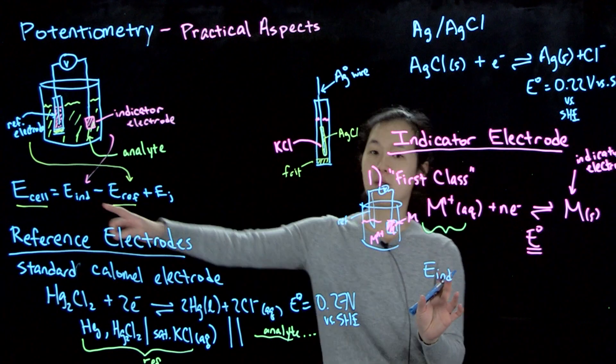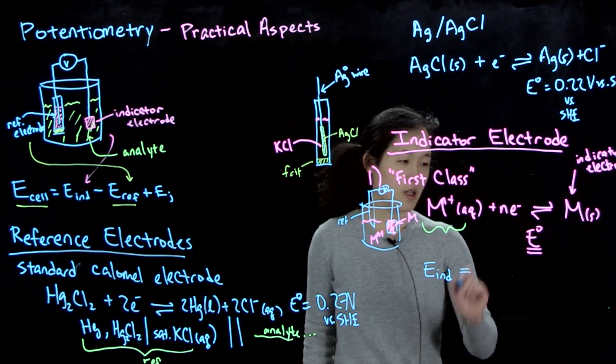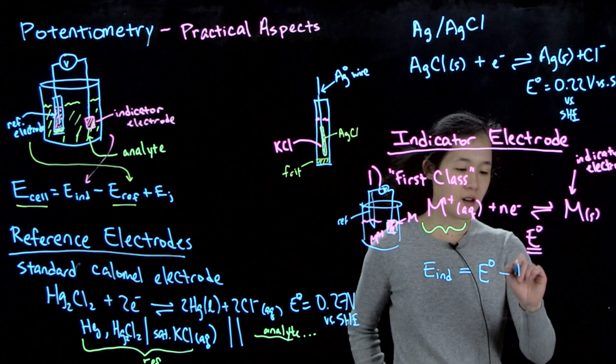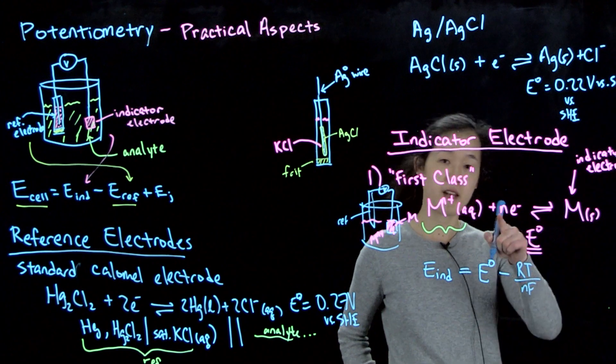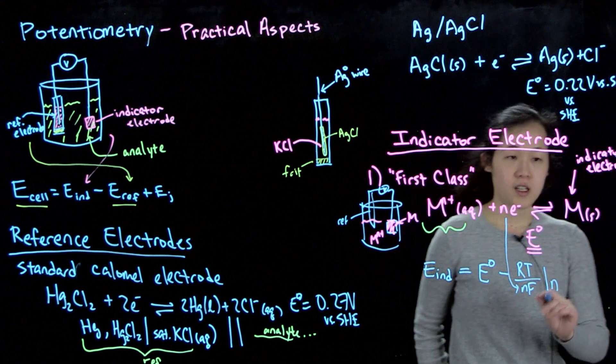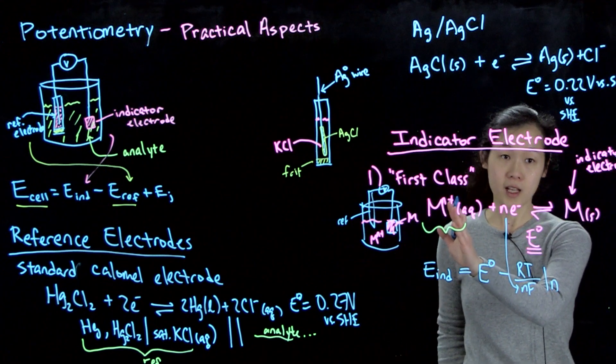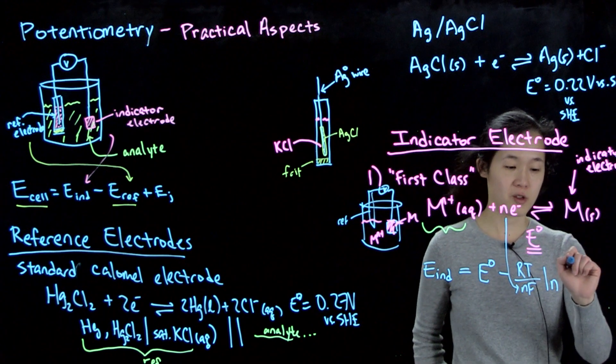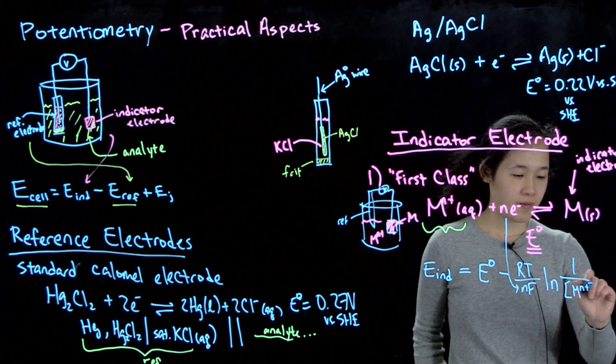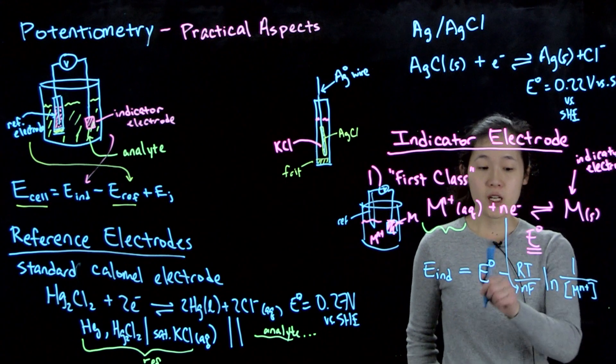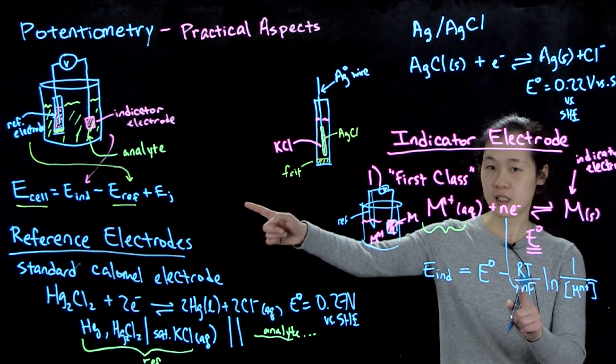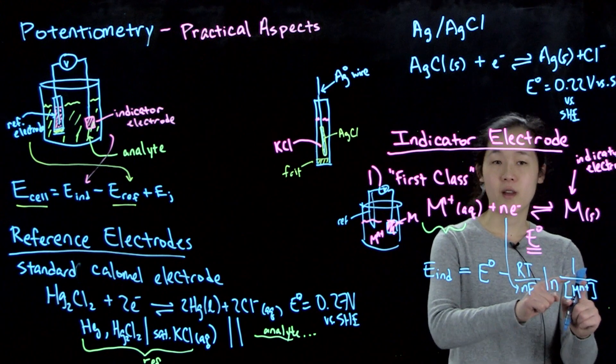So this will be, if we know E naught, we can then measure the cell potential, subtract out the reference electrode potential, and we should be able to find that E indicator. This indicator potential that we got from this equation is going to be equal to our E naught. And in this case, this will be minus RT over NF. So again, N is the number of electrons that are being passed. And then this will be the natural log. In this case, it's going to be products over reactants. So it's going to be the activity of the solid electrode, which is one, over the concentration of the metal ion. So basically, if we know this, we know this. All you need to do is measure the indicator electrode potential by doing this calculation. And then we can find out, solve for the concentration of metal ions.